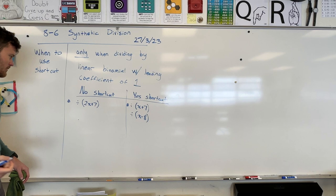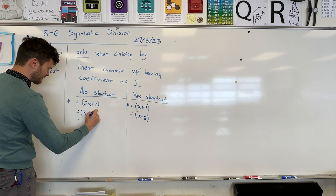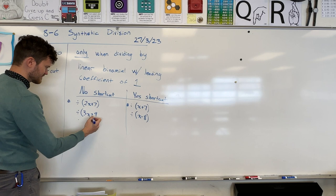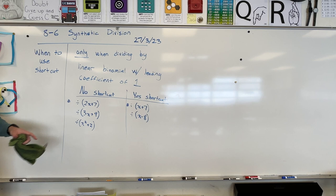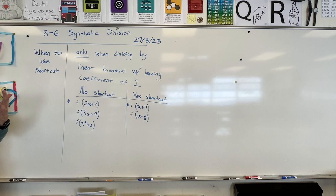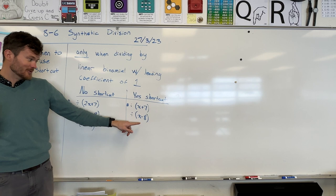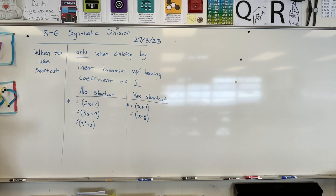Give me an example. 3x plus 9 — no, that doesn't work because the leading coefficient is 3, not 1. This has to be linear with a leading coefficient of 1. Do you understand when you can use and when you cannot use a shortcut? It'll save some time on the quiz and test. I'll give you some of these and won't tell you — if you see a nice one, go ahead and use synthetic division.